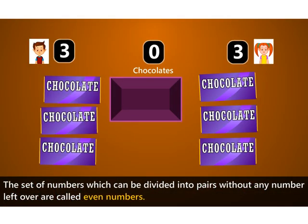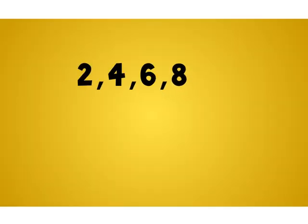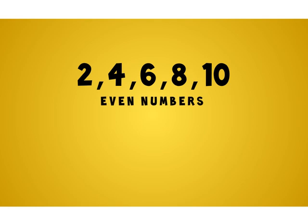The set of numbers which can be divided into pairs without any remainder are called even numbers. 2, 4, 6, 8, and 10 are even numbers.